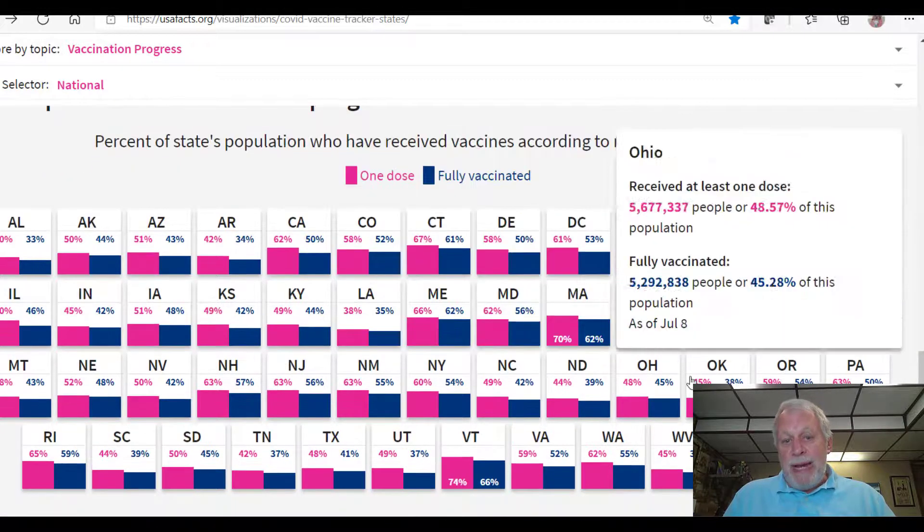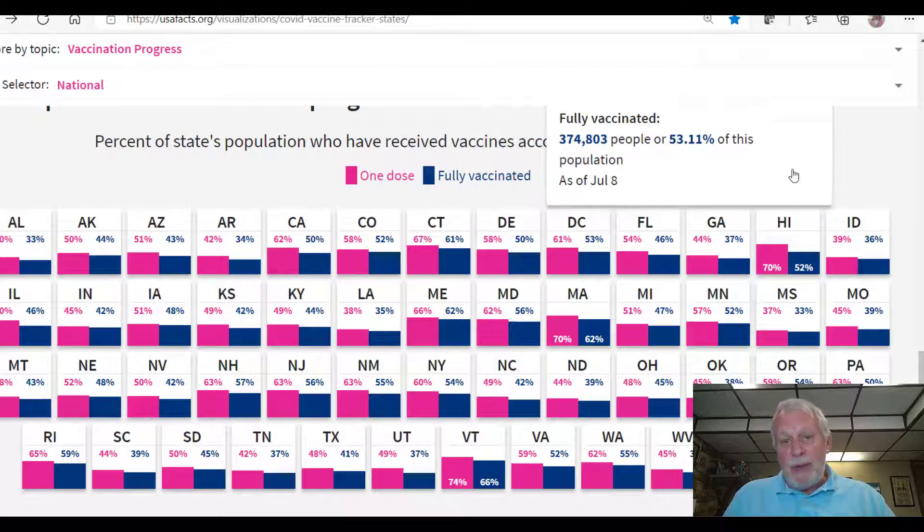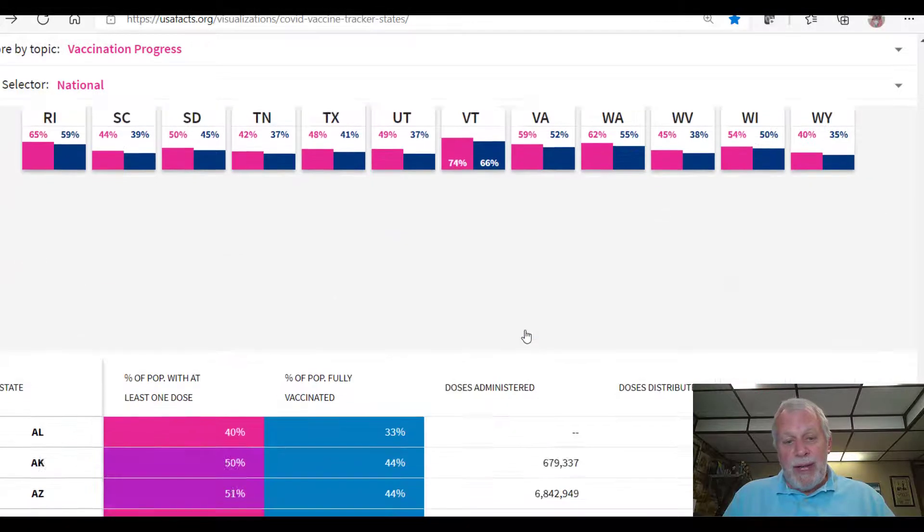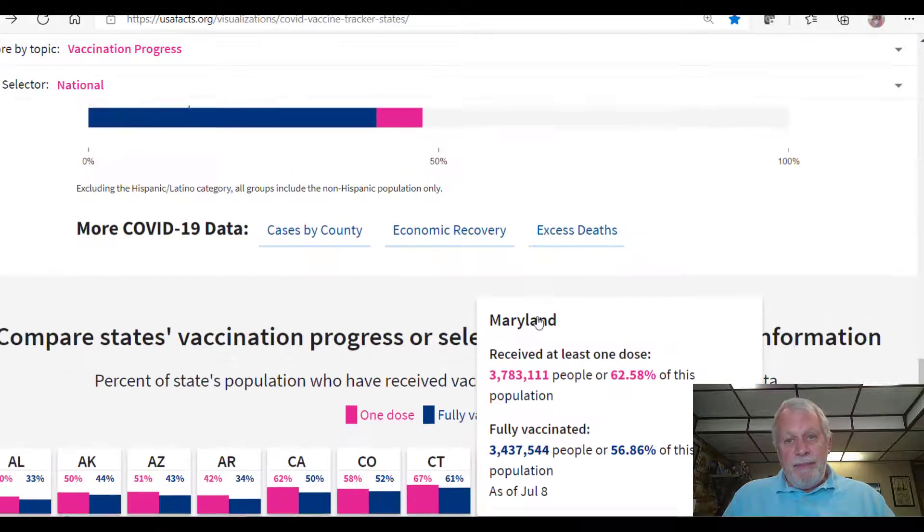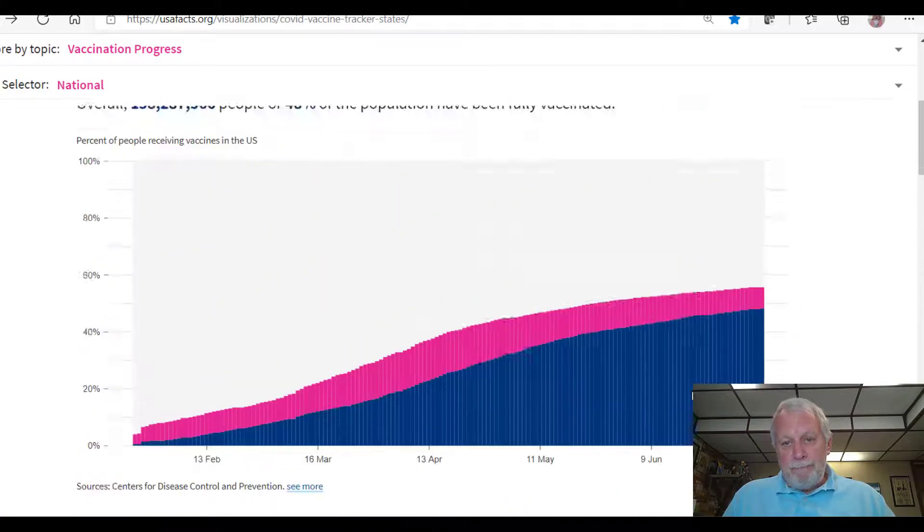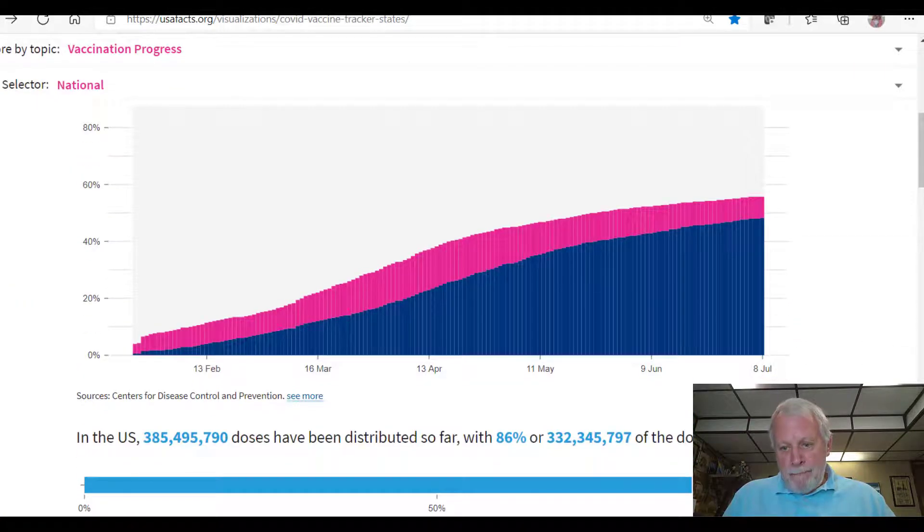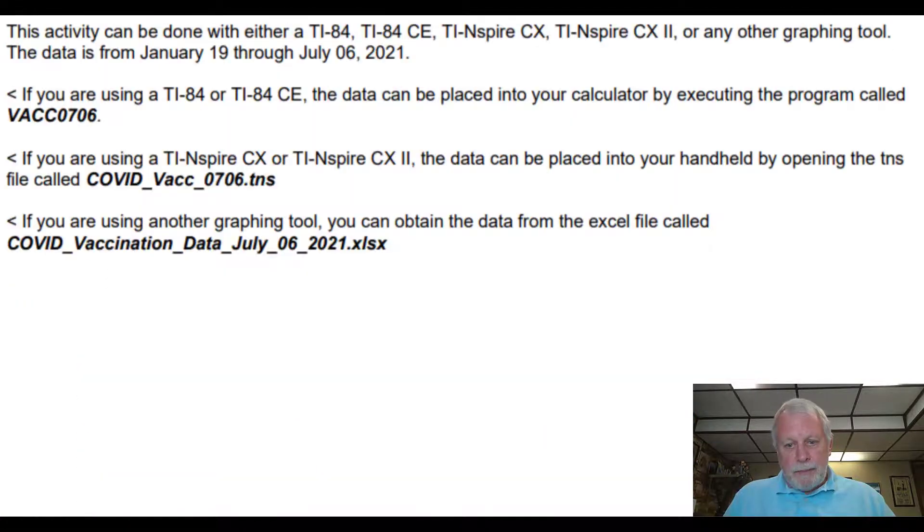Even by state, you can go to each individual state and see what's going on. This activity can be done with either TI-84 or 84 CE and TI-Nspire. I have the data in an 84 program, in TI-Nspire, and also in a spreadsheet so that if you're using something else, you can use that data as well.